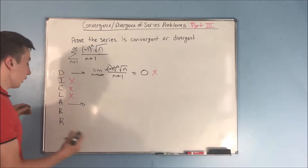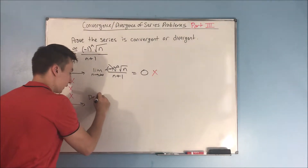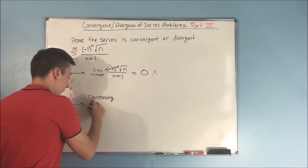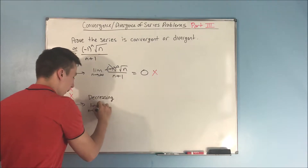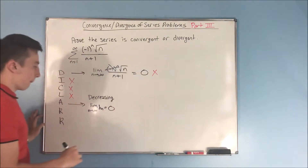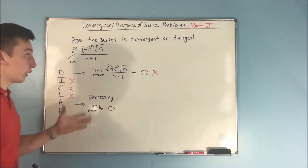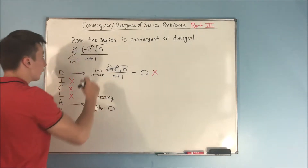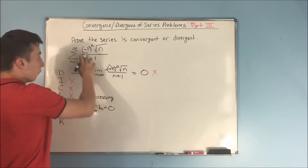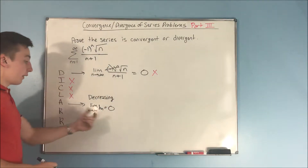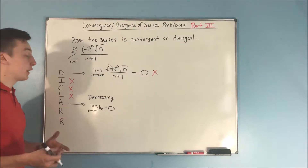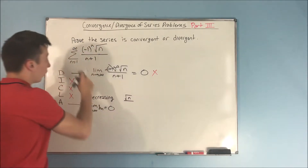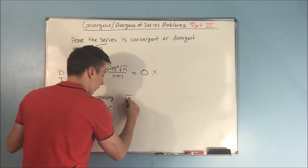When we do this, first we need to prove that this is decreasing, and we need to prove that the limit as n approaches infinity of b sub n equals zero. If we can prove that, then this is convergent by the alternating series test. So first, let's get rid of that negative one to the n — we're not going to worry about that. That gives us our b sub n, which is the square root of n over n plus one.